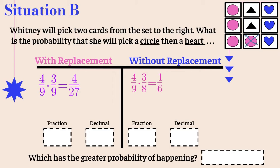Let's figure out which is more likely. For with replacement, the fraction is 4 over 27, which gives a decimal of 0.1418. For without replacement, the fraction is one sixth, which as a decimal is 0.16 repeating. Both decimals start with 1, so we go to the hundredths place — 4 versus 6 — and 6 is greater. So again, without replacement has the greater probability.